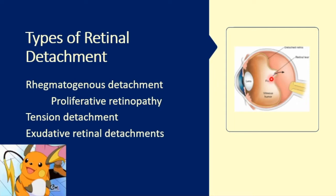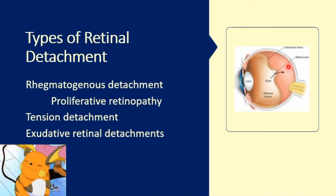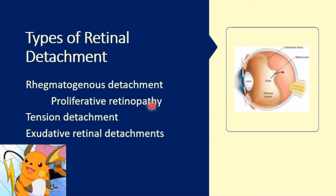Looking at the diagram, it shows a rhegmatogenous detachment — there is a tear, a hole, and the vitreous humor fluid is going into the retina, causing the sensory retina to be pulled away from the RPE. Risk is high among patients with myopia and those with aphakia due to absence of the natural lens after cataract surgery. Five to ten percent of all rhegmatogenous detachments are associated with proliferative retinopathy, which is also associated with diabetic neovascularization.